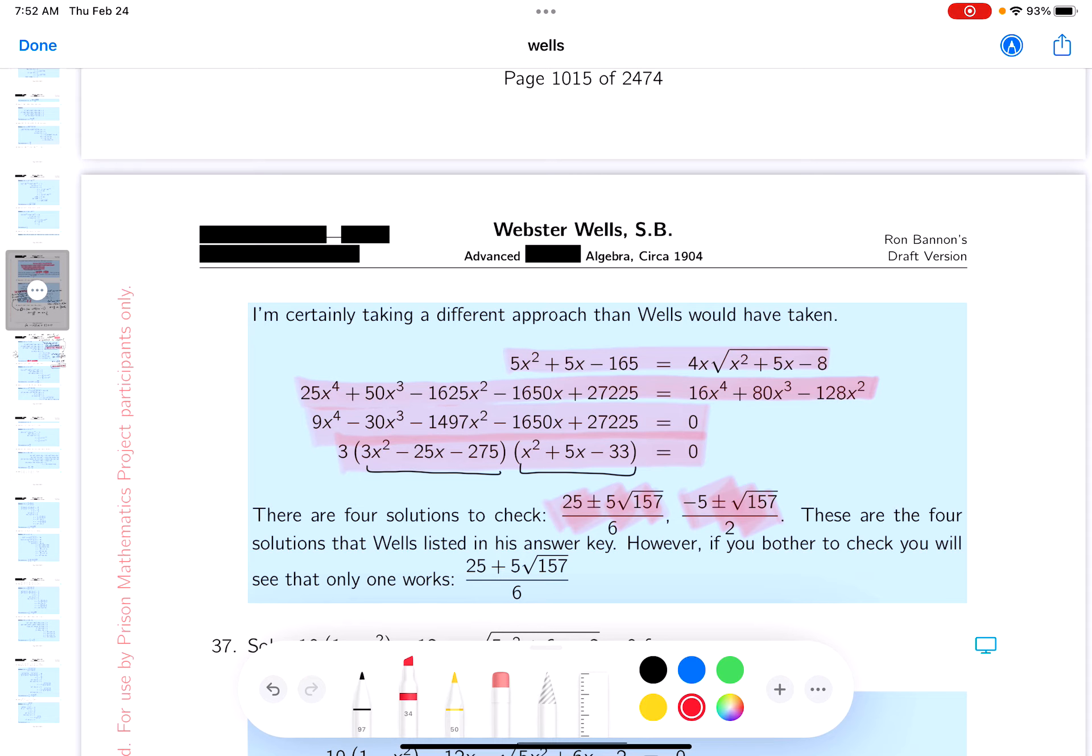There's four solutions to check. These are the four solutions that Wells listed in his answer key. Remember I told you about Wells's answer key? They're really sparse. I mean, a lot of the questions aren't even answered.